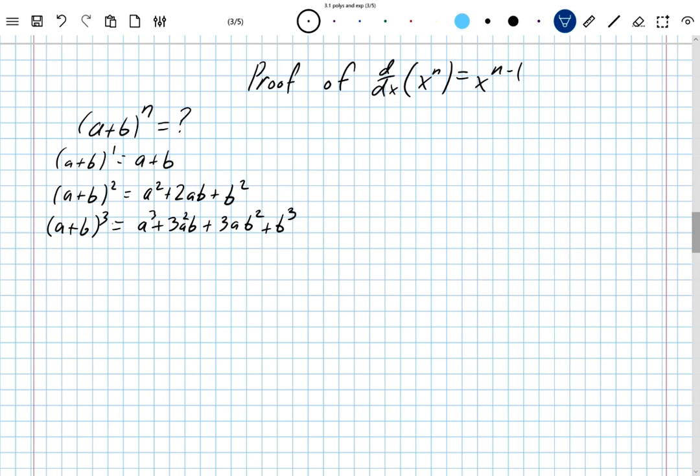It goes a little bit like this. If I write down these coefficients, I should include 0 as well. So, if a plus b to the 0 is just a 1, and then it looks like I get a 1 and a 1 for this first case here. And then it looks like I get a 1 and a 2 and a 1 for that squared case, and then I get a 1 and a 3 and a 3 and a 1. And some of you right now are saying, I know what this is.